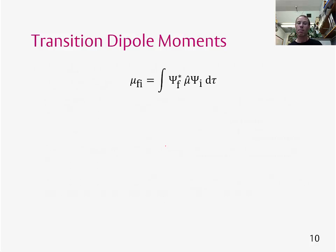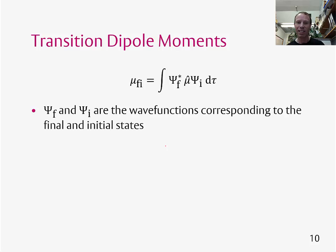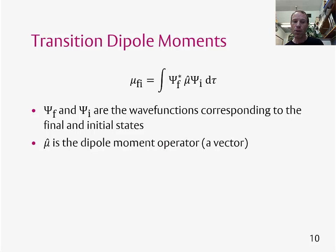Mu fi, where psi f and psi i are the wavefunctions corresponding to the initial and final states. We've got mu with a hat on in the middle of this equation, and this is the dipole moment operator, and it's effectively a vector which gives us a transition between the initial and final states.